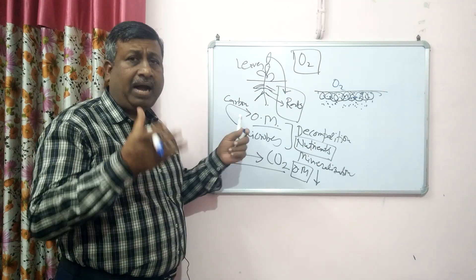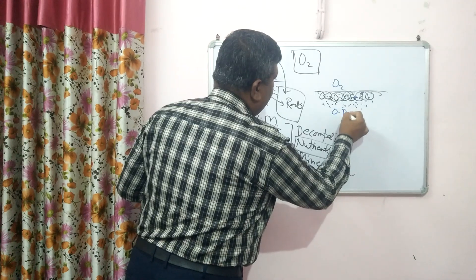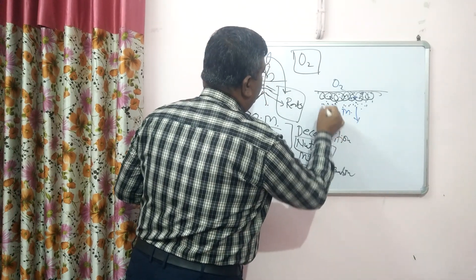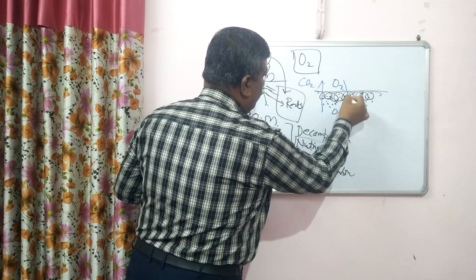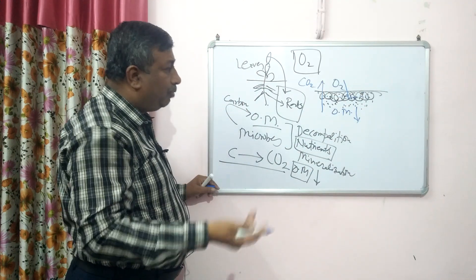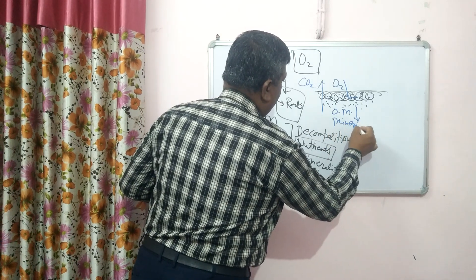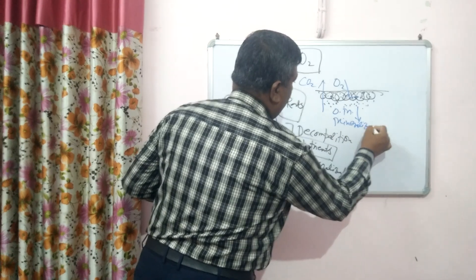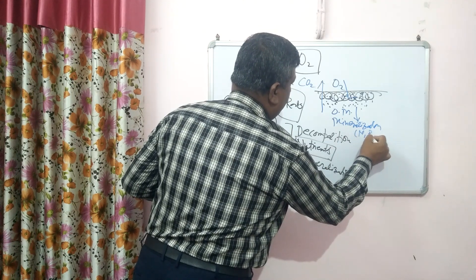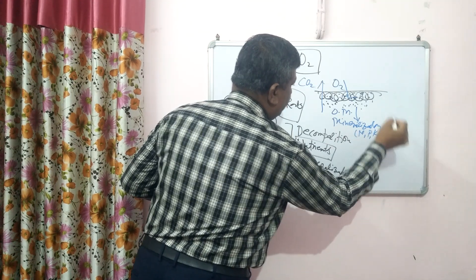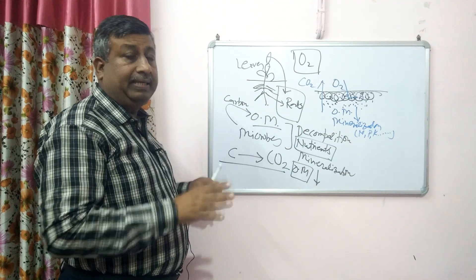As we do the tillage operation, the soil opens and is exposed, and residue is properly mixed in the soil, cut into small pieces by the harrow. The microbial population increases as they get oxygen. As microbial population increases, they act more — and that is why organic matter content decreases. There is a release of CO2, oxygen comes into the soil, and there is mineralization. By mineralization, nitrogen, phosphorus, potassium, and many other nutrients are released and become available to the plant. But organic matter content decreases.